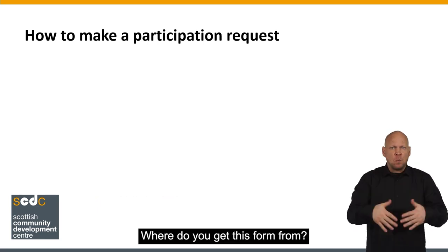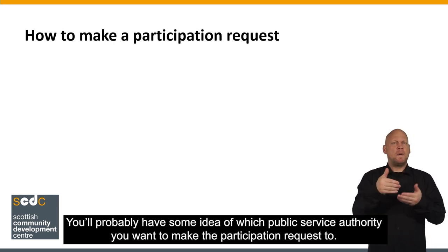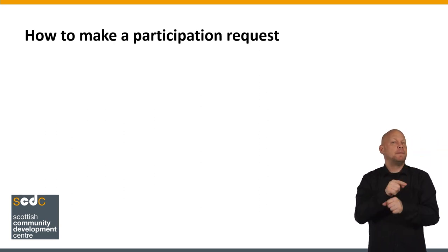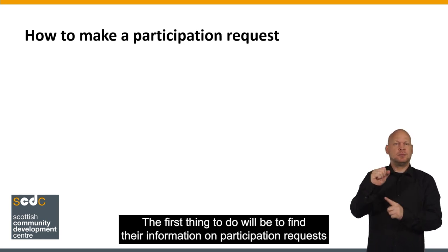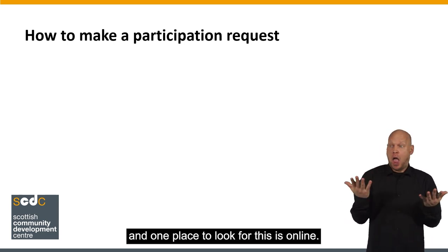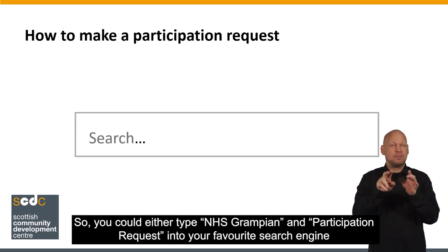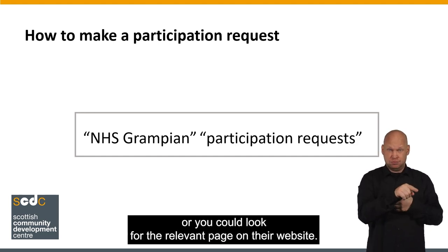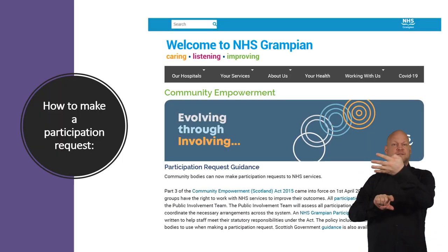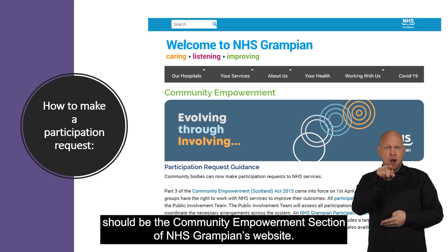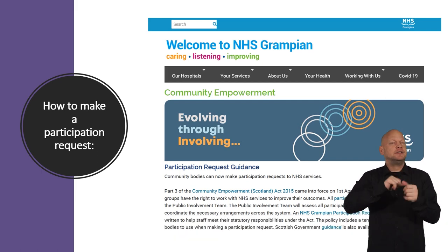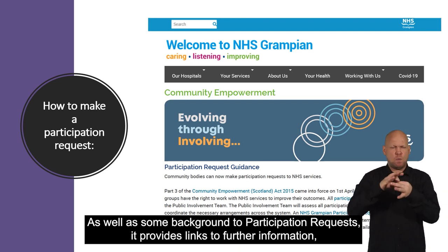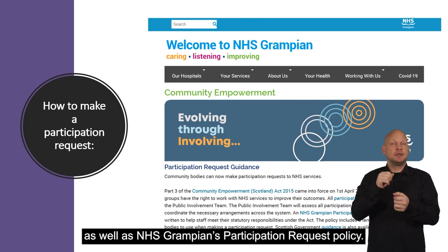Where do you get this form from? You'll probably have some idea of which Public Service Authority you want to make the participation request to. Let's imagine it's NHS Grampian. The first thing to do will be to find their information on participation requests, and one place to look for this is online. So you could either type NHS Grampian and participation requests into your favourite search engine, or you could look for the relevant page on their website. The first search result should be the Community Empowerment section of NHS Grampian's website, which provides links to further information as well as NHS Grampian's participation request policy.